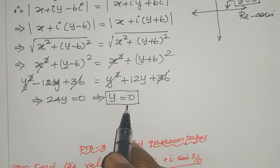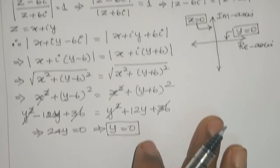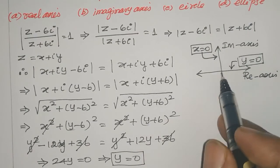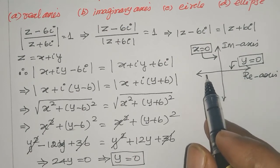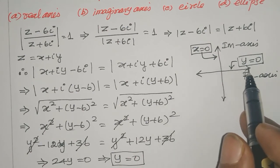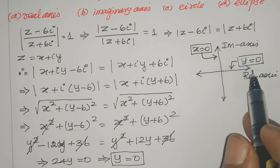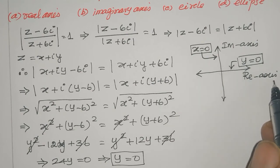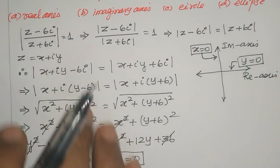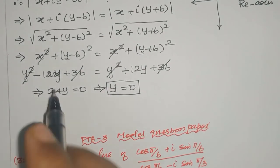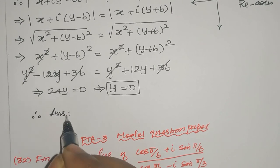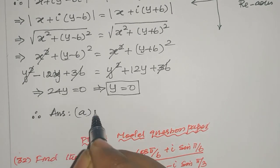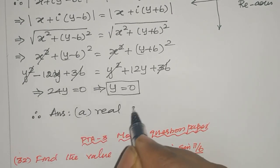The answer is y equal to 0. Since y equal to 0 is the real axis, the complex number z lies on the real axis. So the final answer is: the real axis.